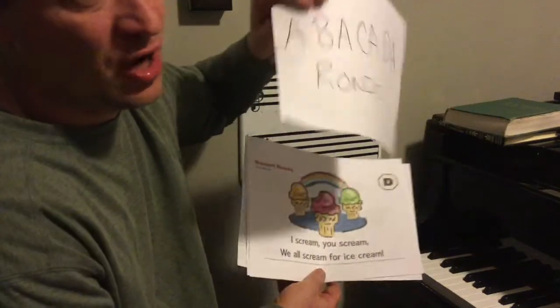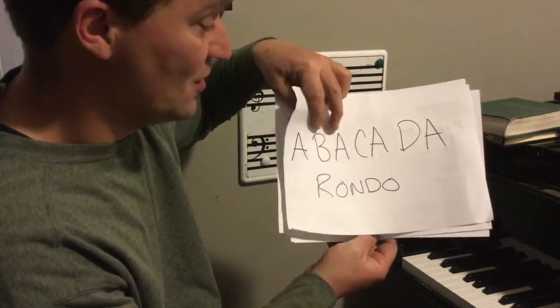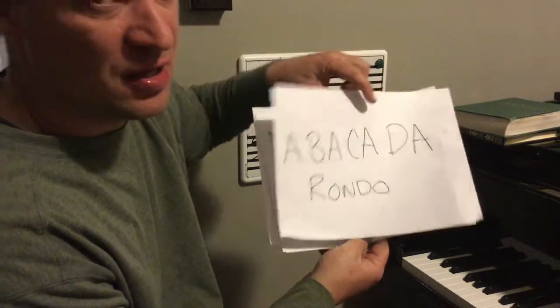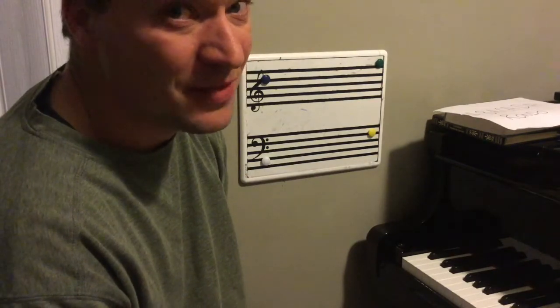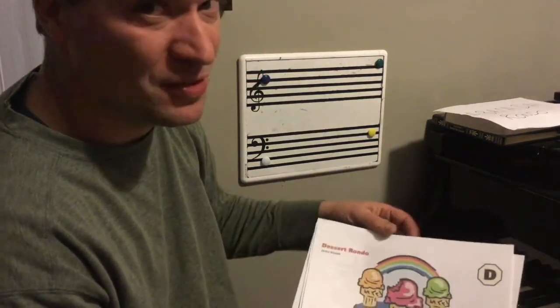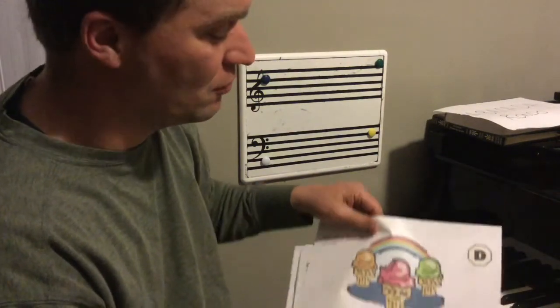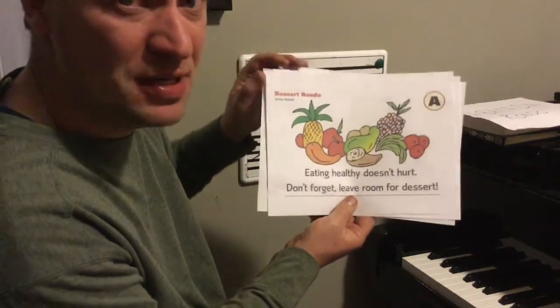So now our job is to say the A section first, then the B section, then the A section, then the C section, then the A section, then the D section, then the A section. Are you ready to help me make our Rondo? Your job is to practice it with me. Then send me a note on Seesaw and just say, 'Mr. Crate, I did it.' That's your only job this week. You don't have to send me a video unless you want to, but I want you to see if you can do it. Remember, each one repeats.